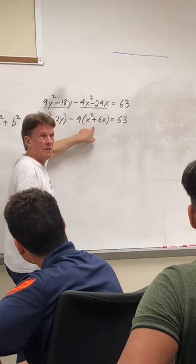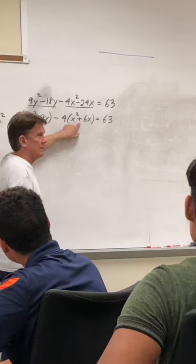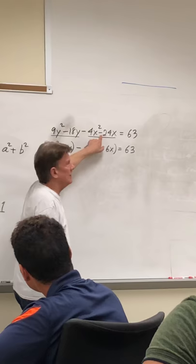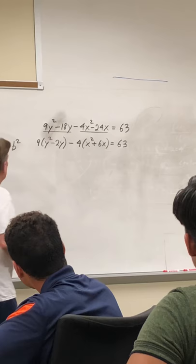A lot of people are using a plus or a minus sign. If you distribute a negative 4 times a negative 6, that would give you a positive 24. Be careful about that.